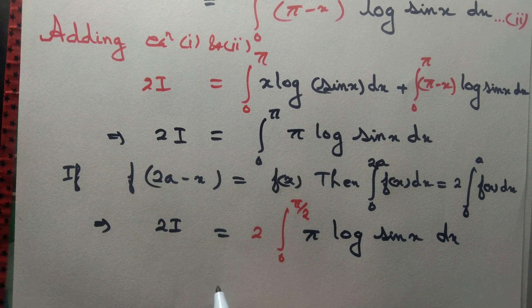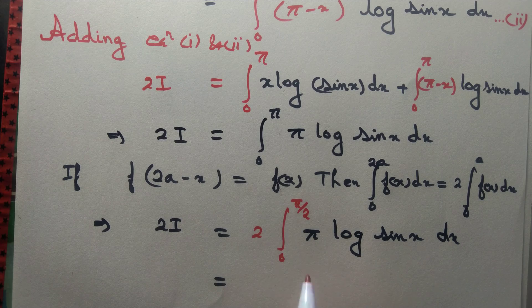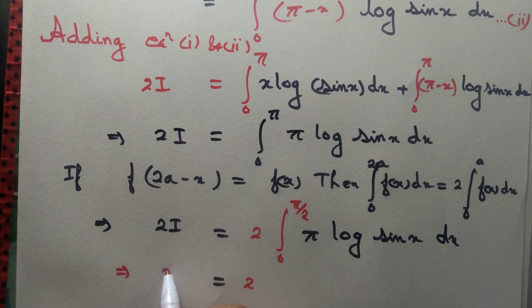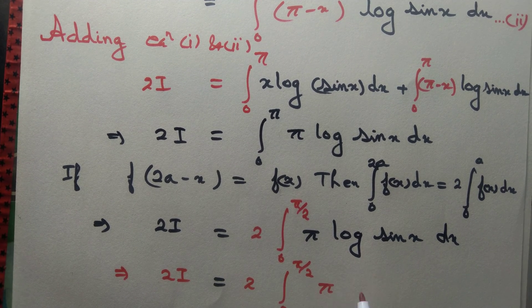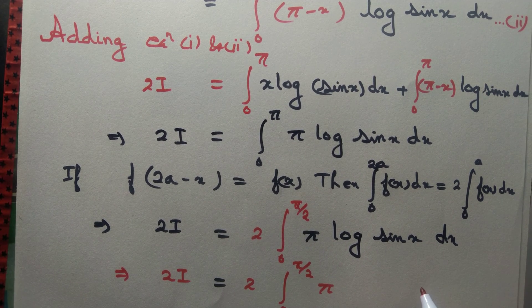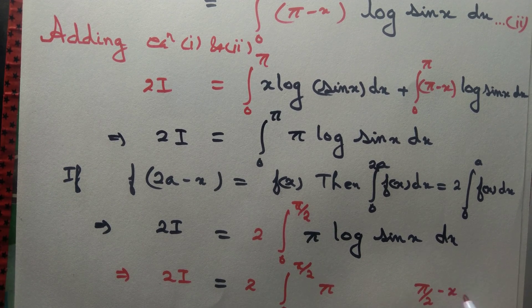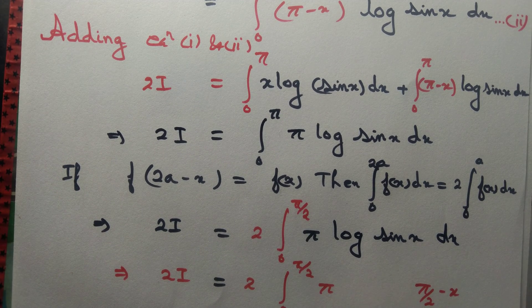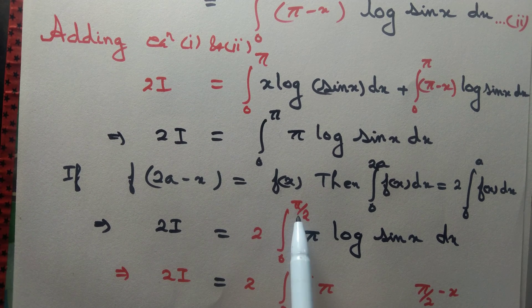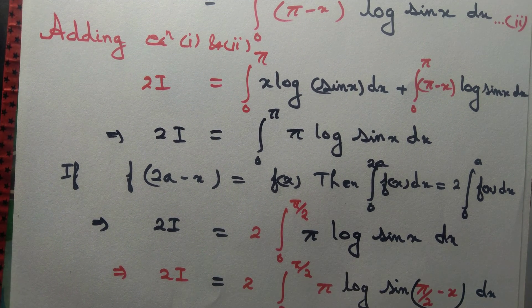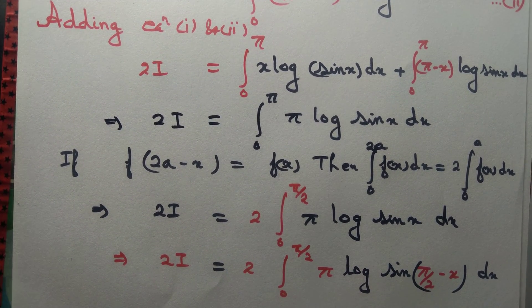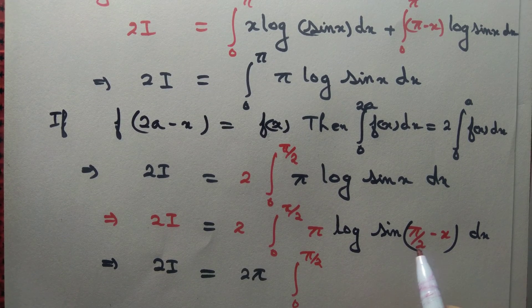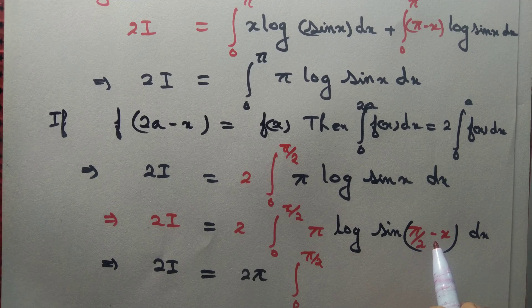Now again we apply the formula. We replace x by π/2 minus x in the integral from 0 to π/2. So we can replace x by a minus x where a = π/2. Since sin(90° - θ) = cos θ, we get the integral from 0 to π/2 of π·log(cos x)dx.